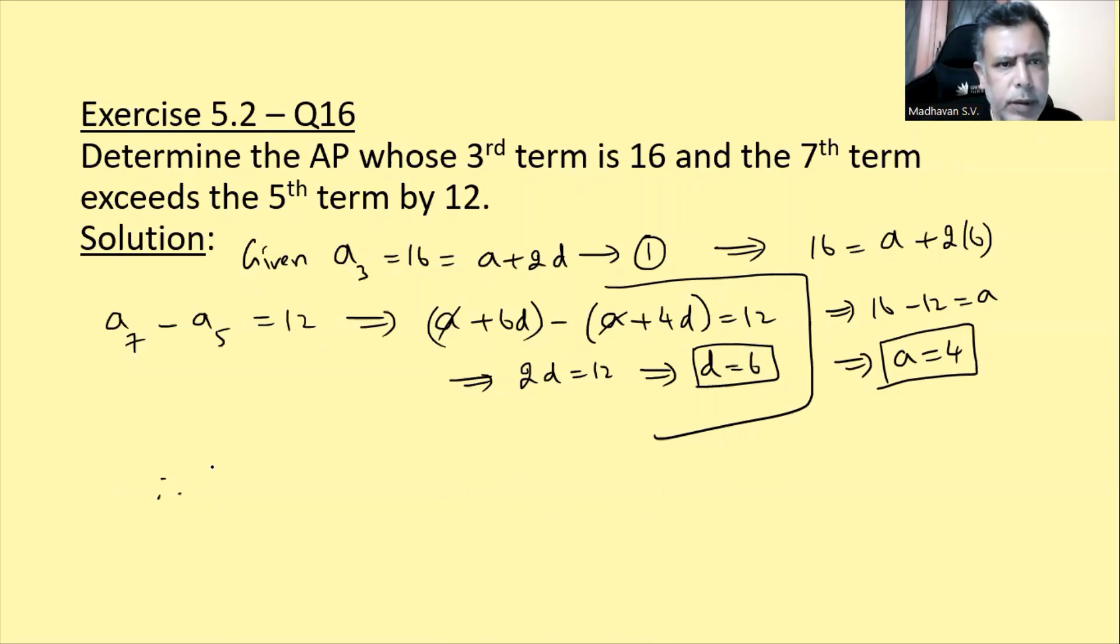Therefore the AP will be, pahla term hai 4, uske baad mein d add hoye ga. 4 plus 6 is 10, 10 plus 6 is 16, 16 plus 6 is 22, and so on. Yeh iska solution hai.